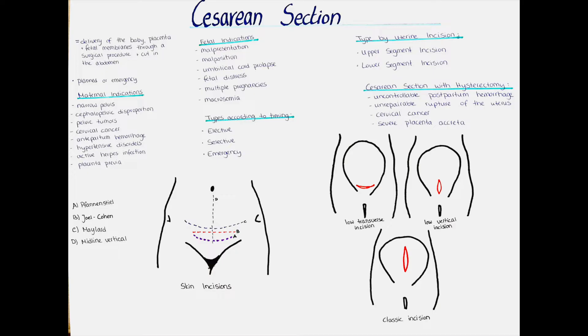Also pelvic tumors or cervical cancer are an indication for a cesarean section, as well as antepartum hemorrhage, hypertensive disorders of pregnancy, abnormal uterine action, active herpes infection, previous uterine scars such as in a cesarean section or hysterotomy, a previous repair of a vesicovaginal fistula, and placenta previa — where parts or the whole placenta is overlying the cervical opening.